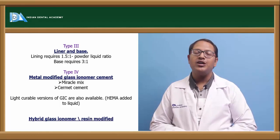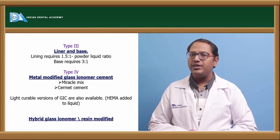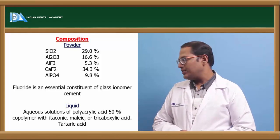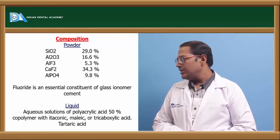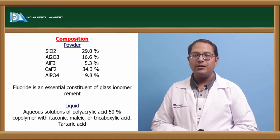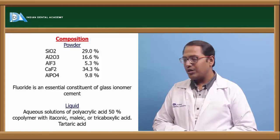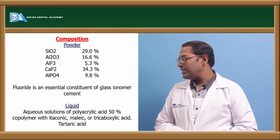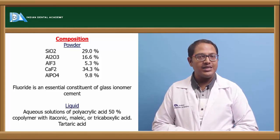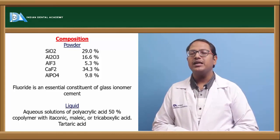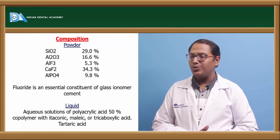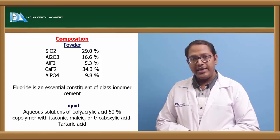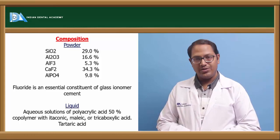The composition of glass ionomer cement powder includes SiO₂, Al₂O₃, AlF₃, CaF₂, and AlPO₄ — that is silicon dioxide, aluminium oxide, aluminium fluoride, calcium fluoride, and aluminium phosphate. Fluoride is an essential cariostatic component of GIC, with calcium fluoride being the maximum powder content. The liquid is an aqueous solution of polyacrylic acid — mainly 50% co-polymer with itaconic acid, malic acid, tricarboxylic acid, and tartaric acid.